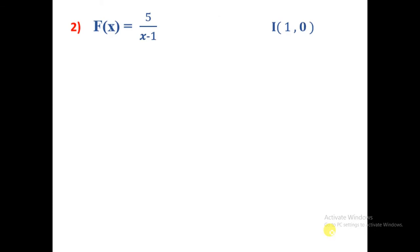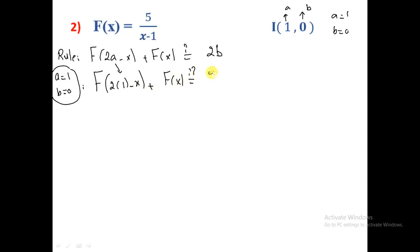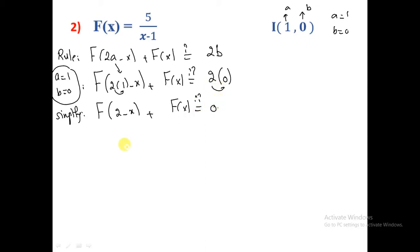Part 2. We have f(x) = 5/(x-1) and we want to prove I(1, 0) is a center of symmetry. So a = 1 and b = 0. We write the rule: f(2×1 - x) + f(x) must equal 2×0 = 0. So f(2 - x) + f(x) = 0, where f(x) = 5/(x-1).